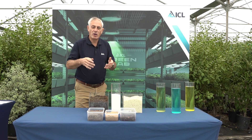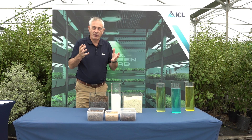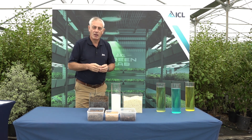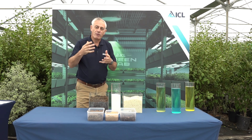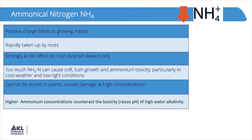We tend to use the term nitrogen very generically, but there are several forms we should be aware of. Obviously within the air we breathe is predominantly nitrogen — this is N2 — and some plants are very clever and can take up elemental nitrogen from the air, things like bean plants. More generally, the forms of nitrogen we're interested in for crop plants are ammonium nitrogen, which is a positively charged cation, and this can be held within the growing media and bind onto the sites — on the peat, bark, or whatever media you're using.